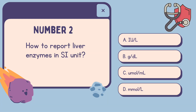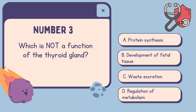Number 2: How to report liver enzymes in SI unit? A. IU/L, B. g/dL, C. micromole/mL, D. millimole/L. The correct answer is A, IU/L.